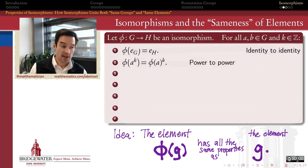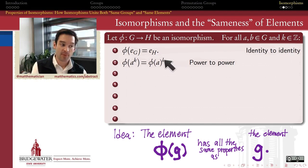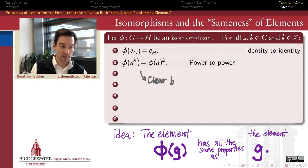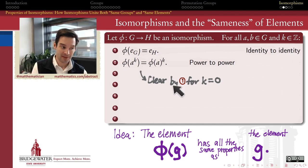Secondly, it associates the powers of elements in one group to powers of its image in the other group: phi of the k-th power of A is the same thing as the k-th power of phi of A. So powers commute with isomorphisms. What's interesting about this is that I've quantified k over the integers, so this is not only supposed to be true for positive natural number powers of an element, but also for the zeroth power — which, by the way, is the identity element.